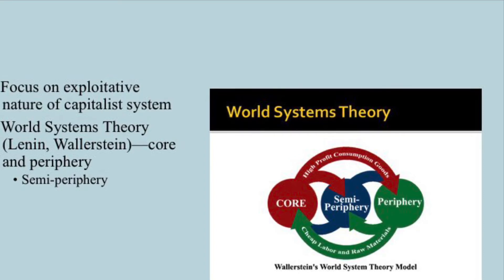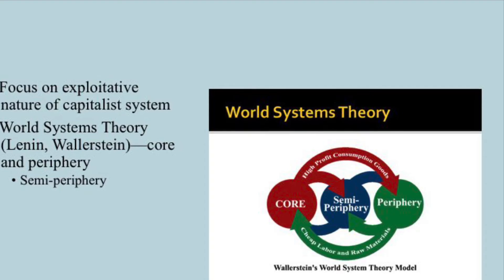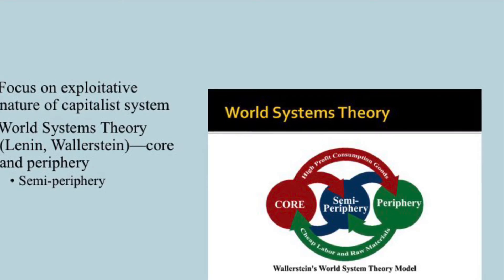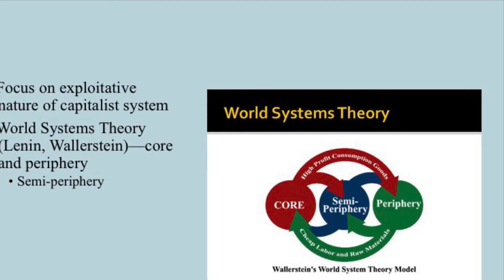An example of a semi-periphery country would be Mexico. They send raw materials like agricultural goods to developed countries, but they are also a middle manufacturing point for car parts. They receive lesser assembled parts, do some manufacturing, and send those parts to the United States for their final assembly and sale, in addition to importing raw materials from other countries and selling things back to them.